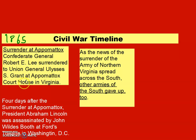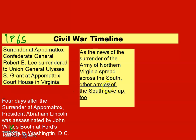Four days after the surrender at Appomattox, President Abraham Lincoln was assassinated by John Wilkes Booth at Ford's Theater in Washington, D.C. In 1865, Booth saw that the Confederacy had fallen and, still upset along with many others, they planned an assassination of Abraham Lincoln and others.